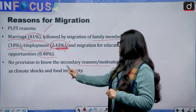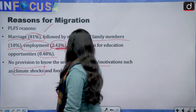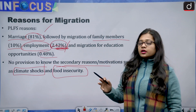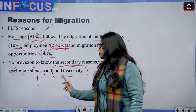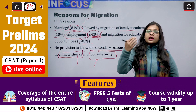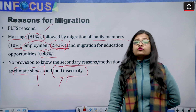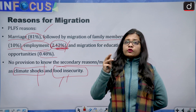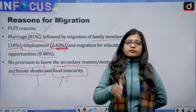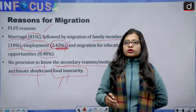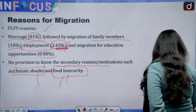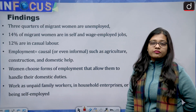There is no provision in the PLFS data to capture secondary reasons or motivations such as climate shocks and food insecurity. Climate change and movement of people because of climate change is one of the most burning issues and will become even more prominent in the coming times. Looking at global events — the Russia-Ukraine conflict, the Israel-Hamas war — people are forced to migrate, and food insecurity can be one of the biggest reasons for migration.